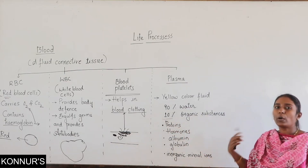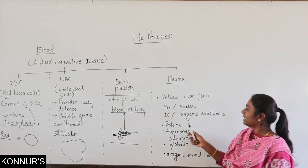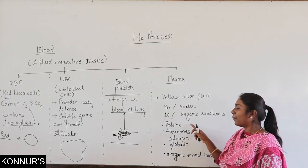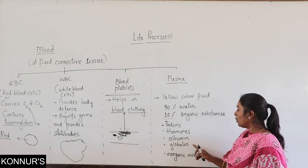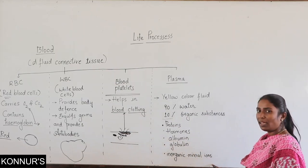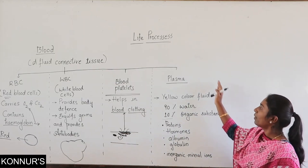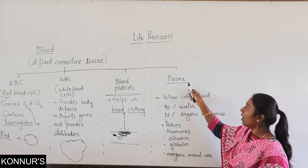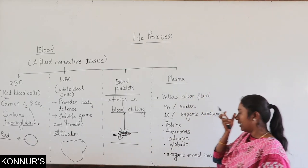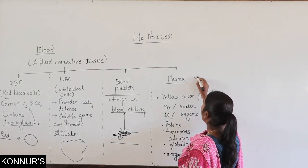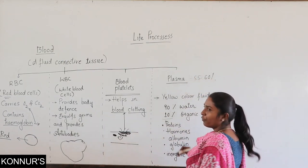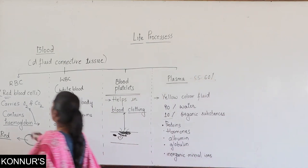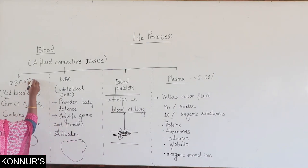Plasma consists of 90% water and 10% organic substances. The organic substances include proteins, hormones, albumin, globulin, and some inorganic minerals. Plasma constitutes about 55 to 60% of blood, and RBC constitutes about 45 to 50% of blood.